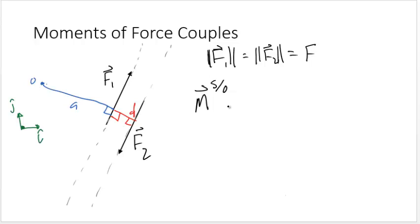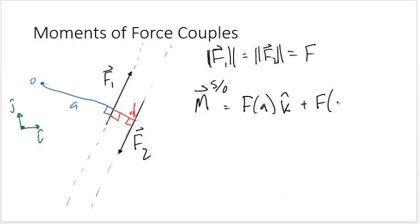The moment from the set of forces in the system about point O is equal to the magnitude F1, which is F times a, and the direction can be determined from the right-hand rule — in this case it would be positive k̂. Plus the moment due to F2, which would be F times the perpendicular component (a plus d), and using the right-hand rule we find the direction is negative k̂.